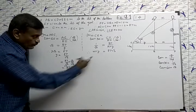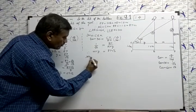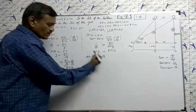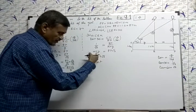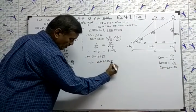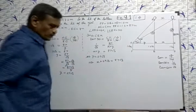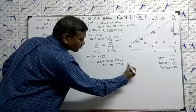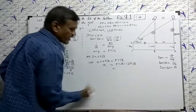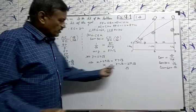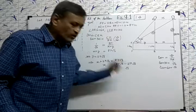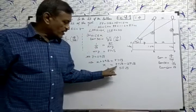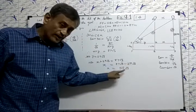Now substitute the Y value here. X plus Y, X plus 29 root 3 is equal to 87 root 3. X equal to 87 root 3 minus 29 root 3. Root 3 is the same, so 87 root 3 minus 29 root 3 equal to 58 root 3.